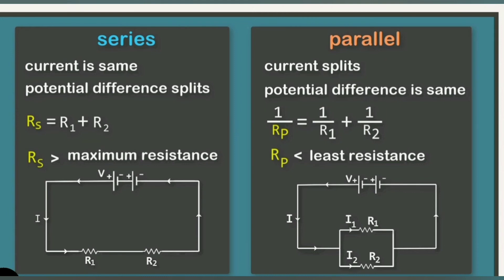In series combination, the resultant resistance is greater than the maximum resistance of the individual resistors. That's why in series combination the total resistance is more, and in parallel combination the total resistance is very less. So in series combination, more resistance means current cannot flow easily.